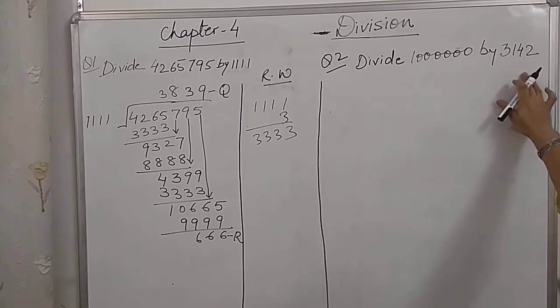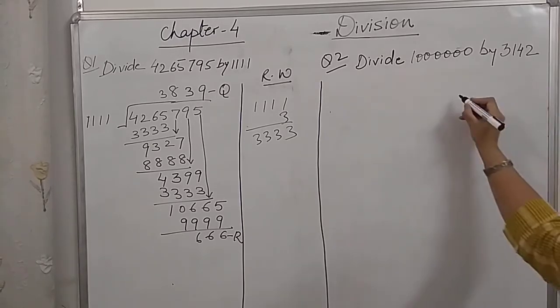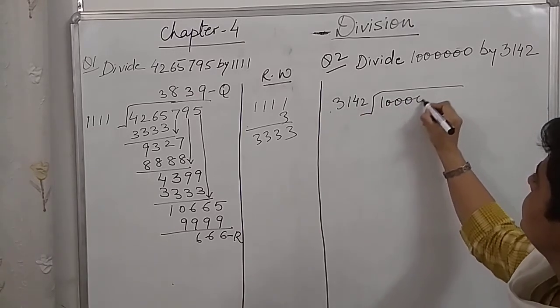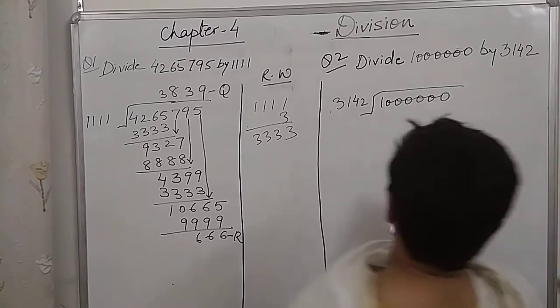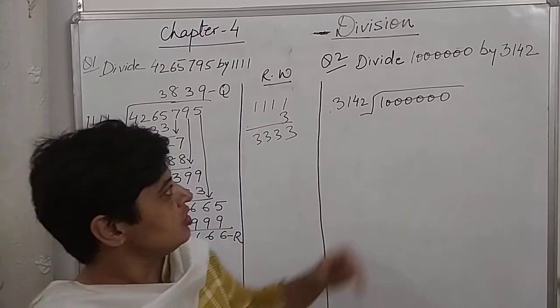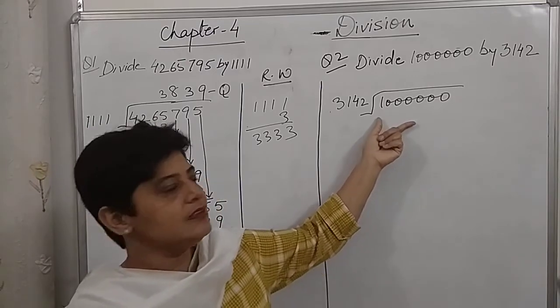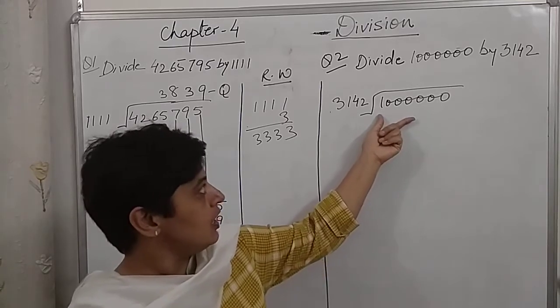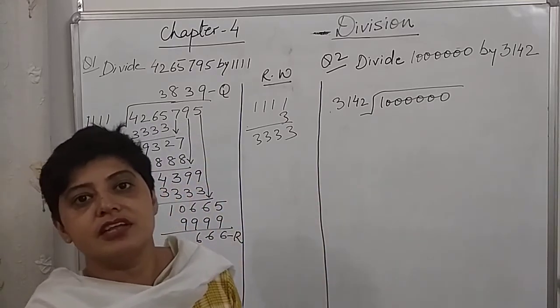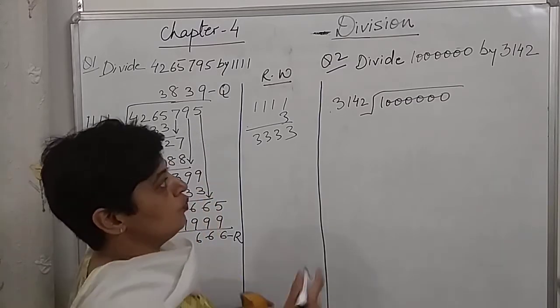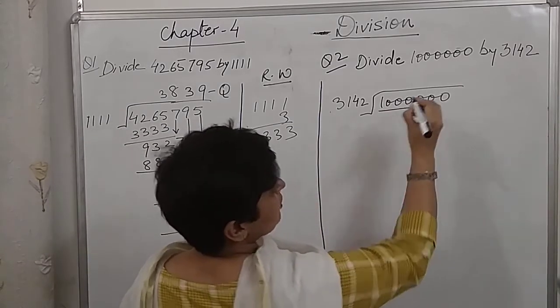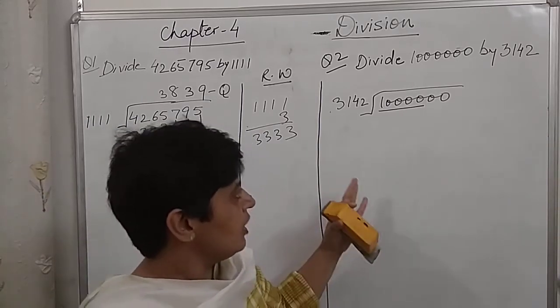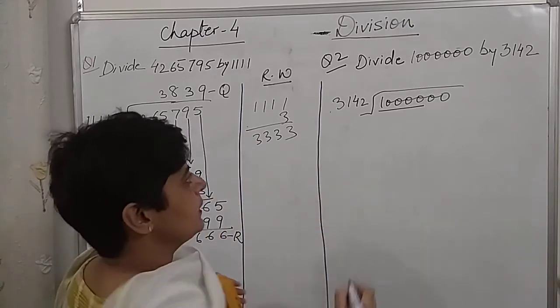Now, let us divide 10 lakh by 3142. Now, divisor is of 4 digits. Let's see if the first 4 digits are divisible by this divisor. The first 4 digits make 1000. And 1000 is smaller than 3142.